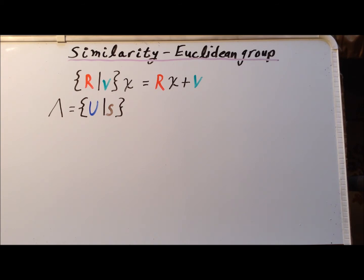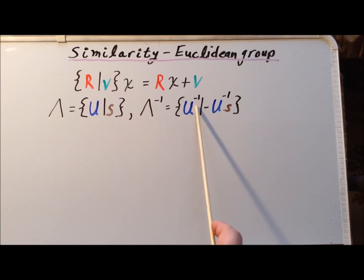We are now going to investigate another Euclidean transformation, lambda, which consists of the rotation U followed by the shift vector S. For this given lambda, the inverse operation, lambda to the minus 1, is going to be the rotation U to the minus 1, its inverse, and then the shift is going to be minus U to the minus 1 on the vector S.